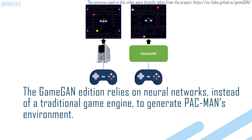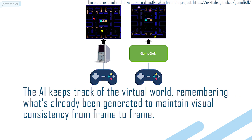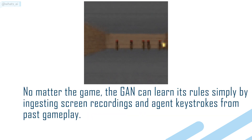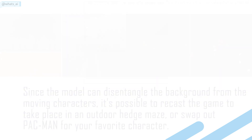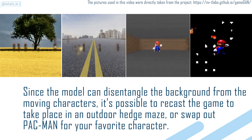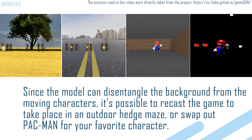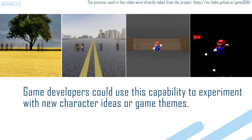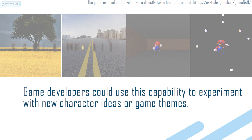The GameGAN edition relies on neural networks instead of a traditional game engine to generate Pac-Man's environment. The AI keeps track of the virtual world, remembering what's already been generated to maintain visual consistency from frame to frame. No matter the game, the GAN can learn its rules simply by ingesting screen recordings and agent keystrokes from past gameplay. Since the model can disentangle the background from the moving character, it's possible to recast the game to take place in an outdoor edge maze, or swap out Pac-Man for your favorite character.